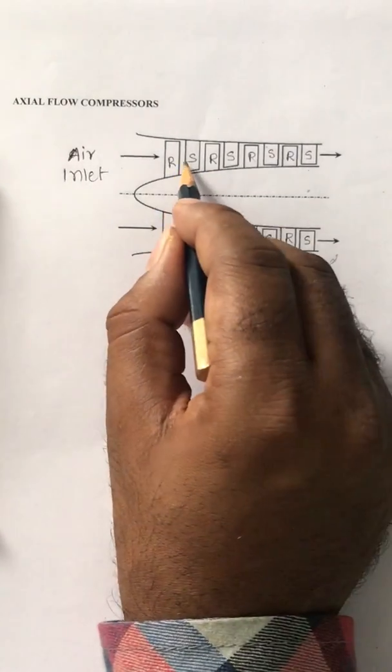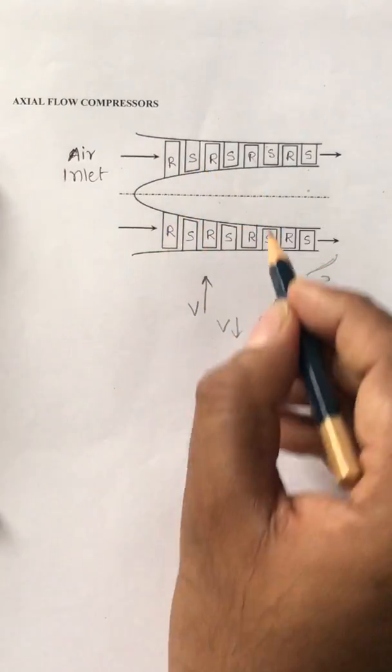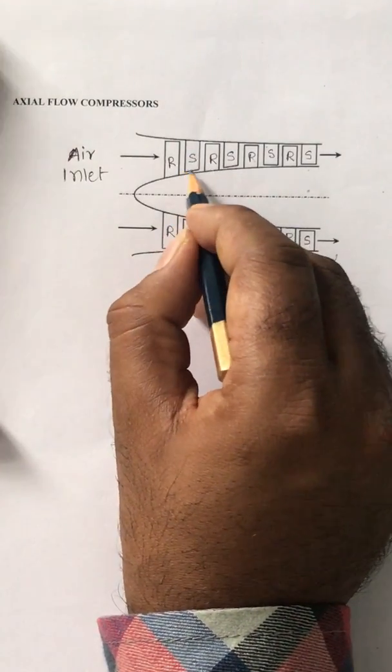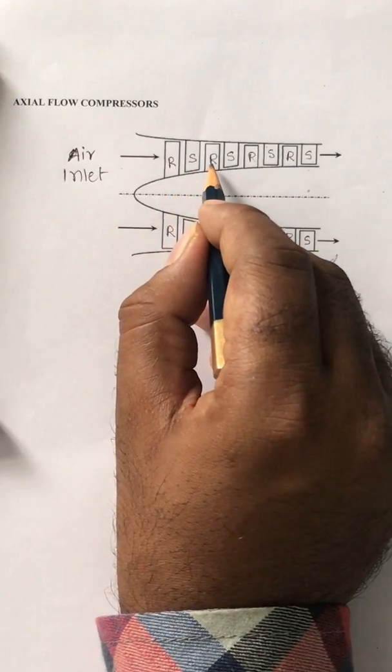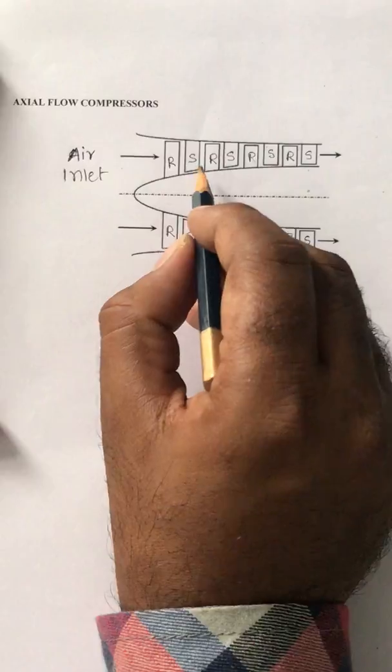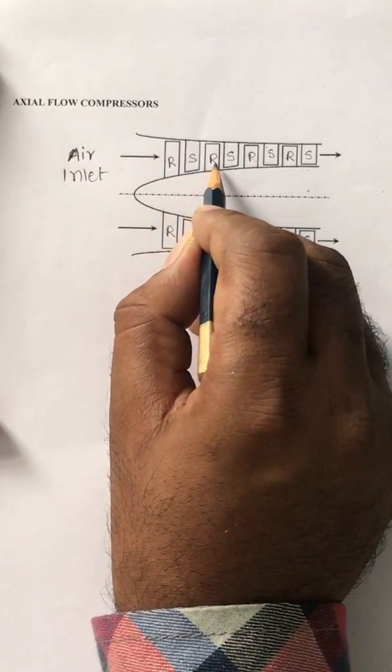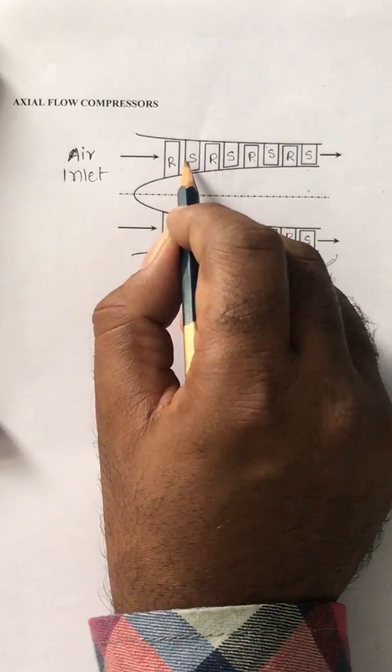So once the pressure increases, the stator blade also guides the air. It provides the diffuser section and the second purpose of the stator blades is it also guides the air to the second stage of rotor blades, that means the second set of moving blades in a smooth way. So to get smooth entry into the second stage, the stator blades are guiding.